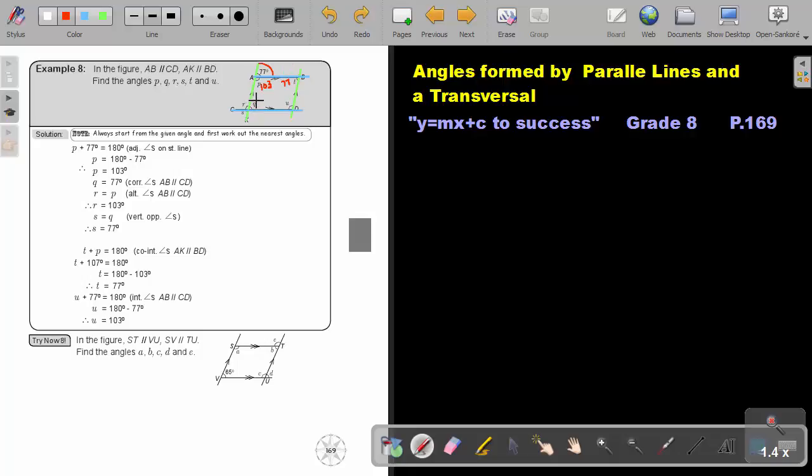Okay. So what was Q? Q and S was 77. This one was also 77, and R was 103.